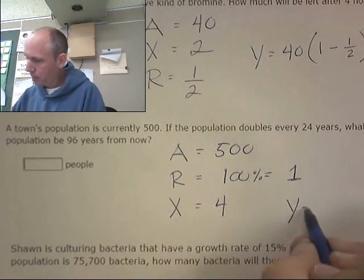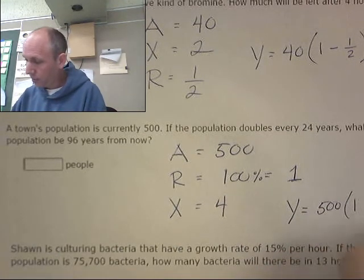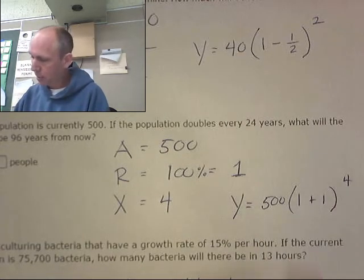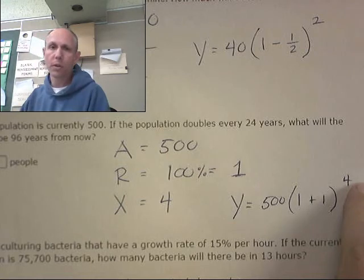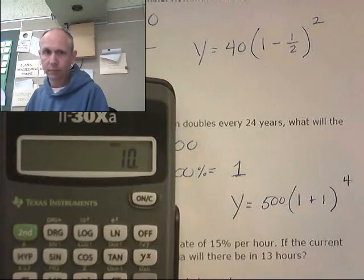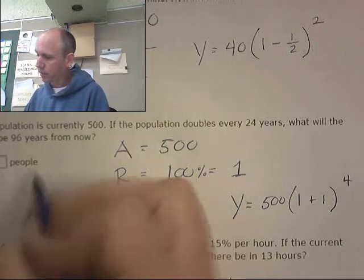Let's build our equation. Y equals 500 times 1 plus 1 because it's a growth and it's happening four times. That's going to be 2 to the fourth. 2 to the fourth is 16 times 500, which should be 8,000. 8,000.